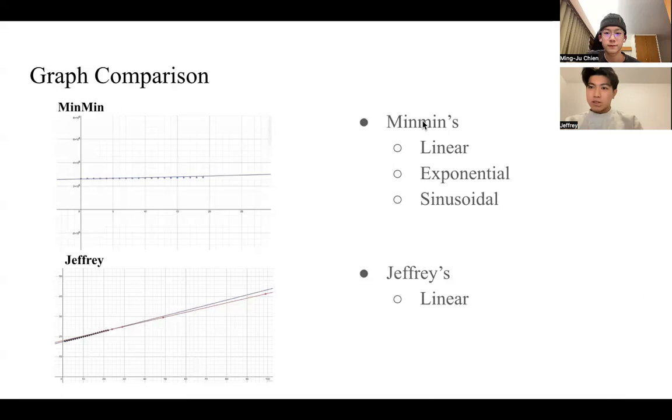Upon comparing our population models, a distinct difference emerges. While my model maintains a stable linear growth, Minmin's population exhibits a more complex pattern, incorporating linear, sinusoidal, and exponential graphs.